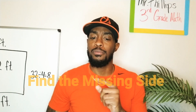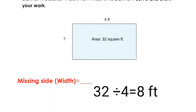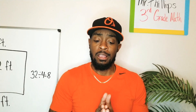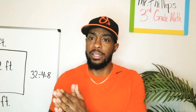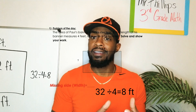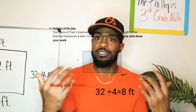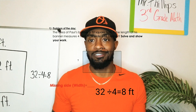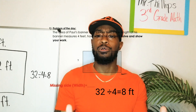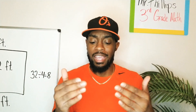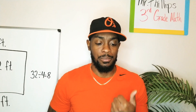Let's look and see how a few of our friends decided to show their work today. First we have Shatika. Shatika wrote out a number sentence: 32 divided by four equals eight. If area is length times width, then to find the missing side, she decided to use division because division is the inverse operation of multiplication. So you start with the total, divide by what they give us, and you get your answer. Great job, Shatika.